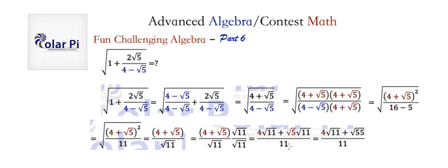root 11 times root 11 is just 11. So we see that the only thing else we could do is in the numerator, we could use square root rules and combine root 5 times root 11 into root 55. And that's that.